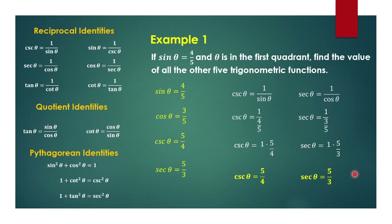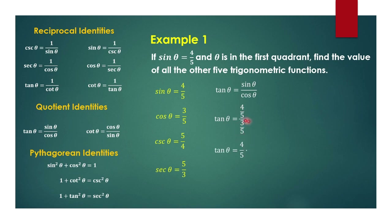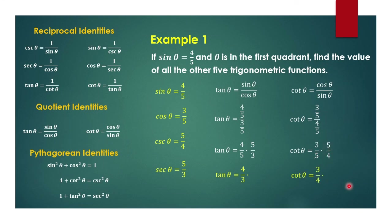We need to get tangent and cotangent of theta using quotient identities. For tangent theta, we have sin theta as 4 over 5 and cosine as 3 over 5. So 4 over 5 divided by 3 over 5 equals 4 over 5 times 5 over 3; the 5s cancel, giving tangent theta equal to 4 over 3. For cotangent of theta, that is the reciprocal of tangent, so cotangent equals 3 over 4. We can verify: cosine 3 over 5 divided by sine 4 over 5 equals 3 over 4, so cotangent theta is equal to 3 over 4.